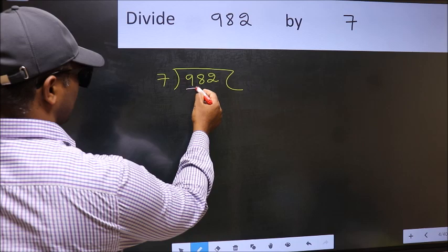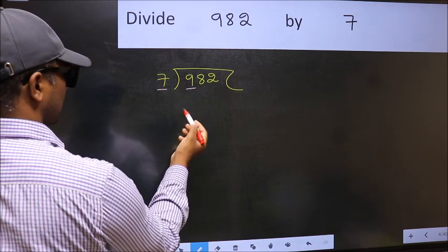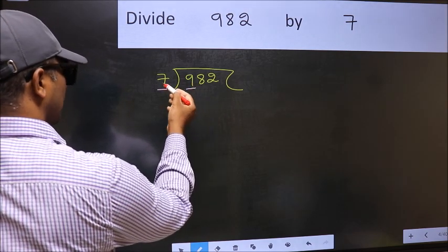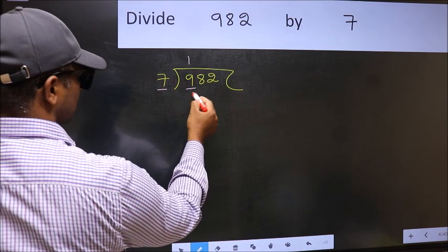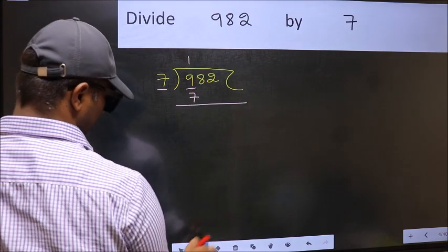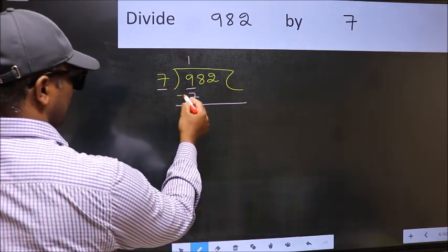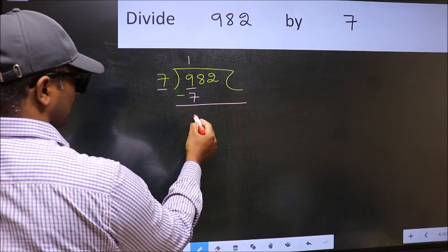Here we have 9 and here 7. A number close to 9 in the 7 table is 7 once 7. Now you should subtract. 9 minus 7, 2.